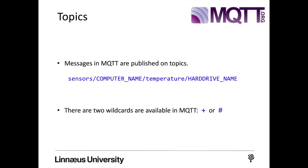Topics are another important concept in MQTT. Topics are the way you register your interest for incoming messages, or how you specify where you want to publish the message. Topics are represented with strings separated by a forward slash, and each forward slash indicates a topic level. For example, you could have sensors, then the computer name, then the topic, and the hard drive name — all different levels of topics, with the forward slash representing the hierarchy.